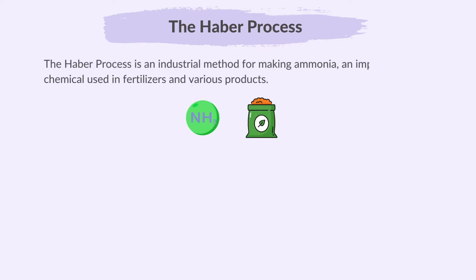Our first topic is the Haber process. The Haber process is an industrial method for making ammonia, an important chemical used in fertilizers and various products.